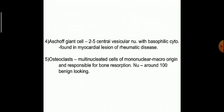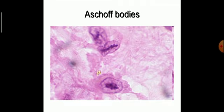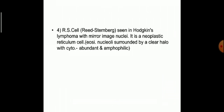Another type is the Aschoff giant cell, which can have 2 to 5 central vesicular nuclei with basophilic cytoplasm; they are found in myocardial lesions of rheumatic heart disease. Another type is osteoclasts — physiological giant cells found in bones. They are multinucleated cells of mononuclear macrophage origin, responsible for bone resorption. The nuclear number can be around 100 and are benign-looking. There is also a particular type of cell called the Reed-Sternberg (RS) cell, mainly found in Hodgkin's lymphoma, though it is not pathognomonic for Hodgkin's.